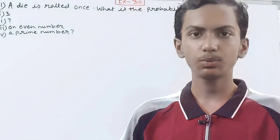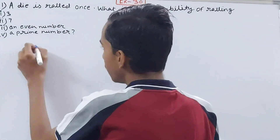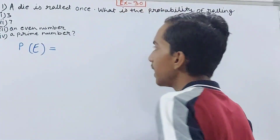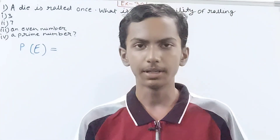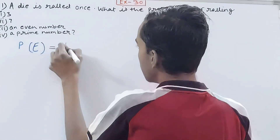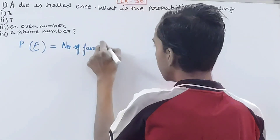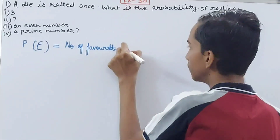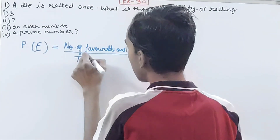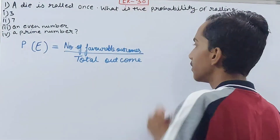Probability is basically predicting what is the chance of an event occurring. We calculate it using a simple formula: the probability of any event E — P(E) — is equal to the number of favorable outcomes upon the total outcomes.